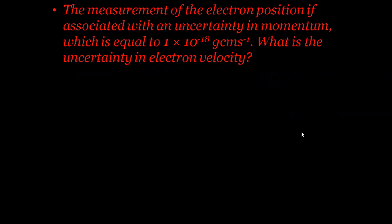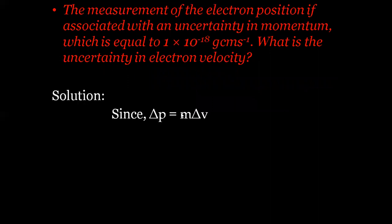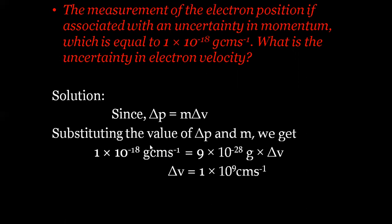Problem 2: The measurement of electron position is associated with an uncertainty in momentum equal to 1 × 10⁻¹⁸ g·cm/s. What is the uncertainty in electron velocity? Since Δp = m·ΔV, we substitute the given Δp and the mass of the electron in CGS units, which is 9 × 10⁻²⁸ g. This gives ΔV = 1 × 10⁹ cm/s.